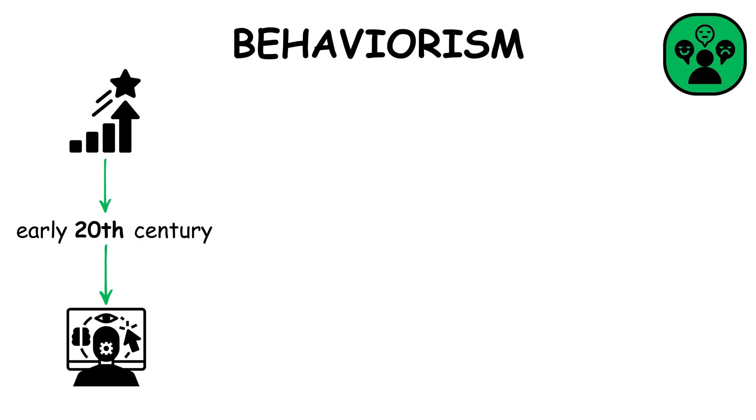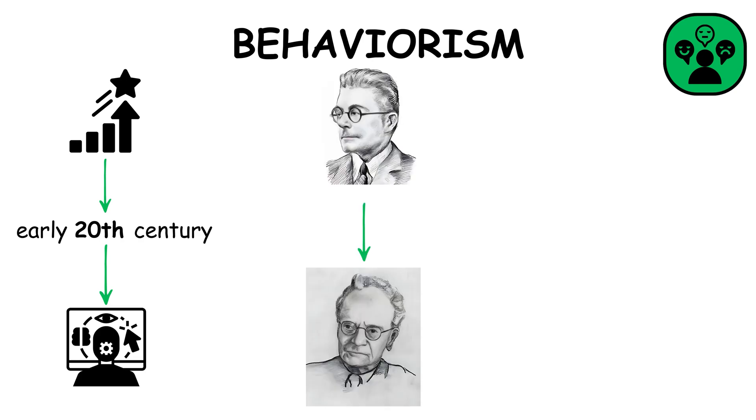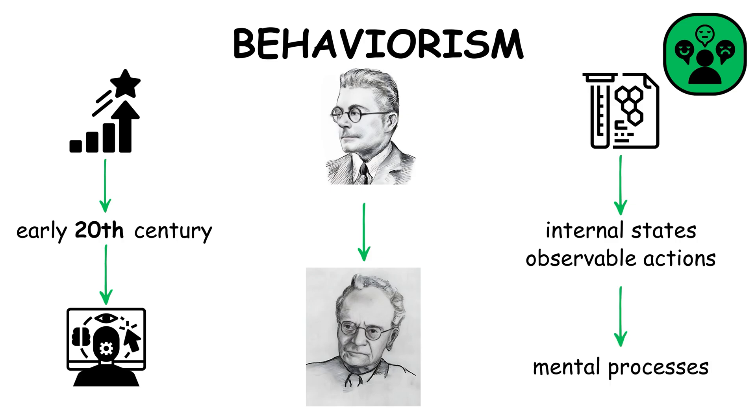Behaviorism, popular in the early 20th century, argues that all behaviors are learned through interaction with the environment. John B. Watson and B.F. Skinner believed behavior could be studied scientifically without internal states, emphasizing observable actions over mental processes.